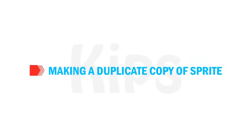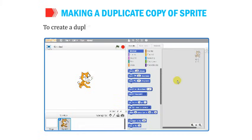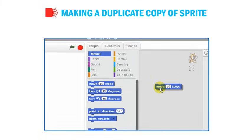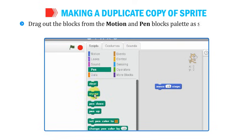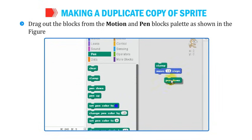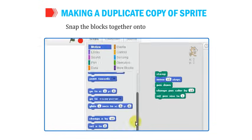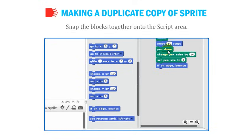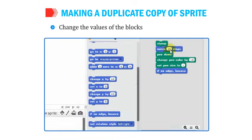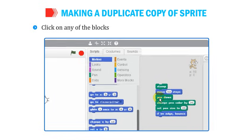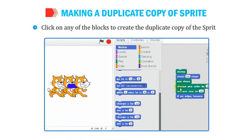To create a duplicate copy of the sprite, the Stamp Block is used. Drag out the blocks from the Motion and Pen Blocks palette, snap them together onto the script area as shown, and change the values of the blocks. Click on any of the blocks to create the duplicate copy of the sprite.